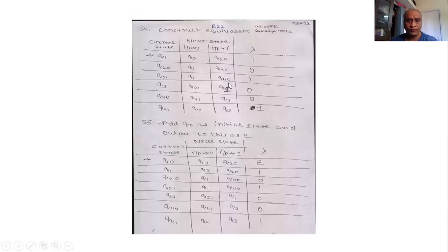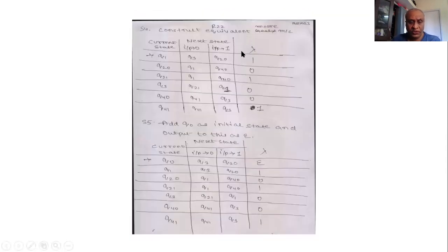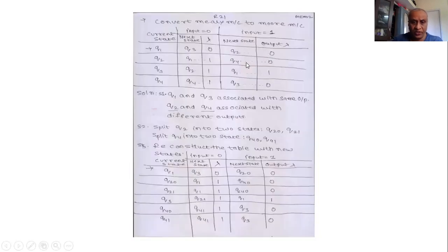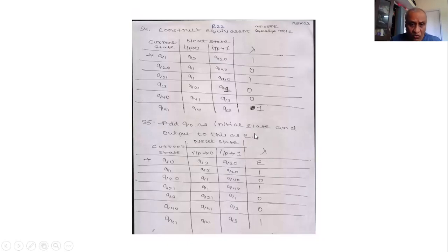This Moore machine table is derived from the previous transition table. The methodology then requires adding Q0 as one more new initial state. Its transitions will be the same as Q1, but the output will be Epsilon. So we add Q0 with transitions Q3 and Q2-0, and Epsilon as the output. This is how we have converted our Mealy machine into a Moore machine.